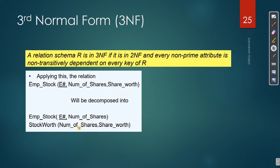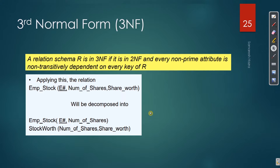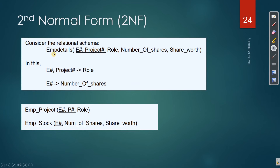Number of shares will be the primary key in one relation, and a foreign key in the other. There should be a primary key and foreign key relationship connection between the tables. So number of shares in one table - through that we can reference share OD in the other. So before decomposition there was one table; after decomposition from 1NF to 2NF, that one table became two tables.